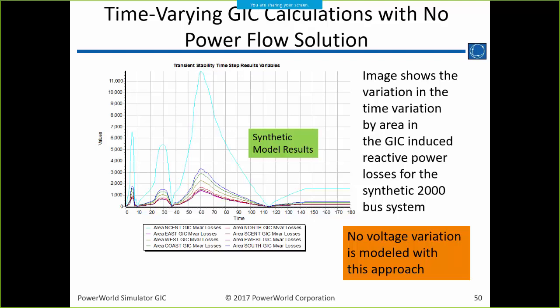A key assumption question: doesn't this assume E1 didn't fry all the electronics? Right — that would be the next step. If within the first 100 milliseconds 10% or 50% of load in the footprint is gone, you can model that in transient stability — it'll have a big impact on frequency. For a blast at a given location, the E1 assumption at the power system modeling stage would mean load loss, generation loss, line trips, and similar events.